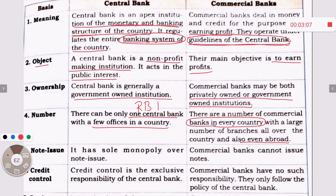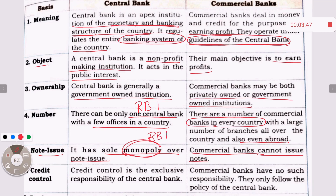The most important point is note issuing. The central bank has sole monopoly over note issue. Commercial banks cannot issue notes — that exclusive responsibility belongs only to the central bank, which is the RBI. Commercial banks have no such responsibility; they only follow the policy of the central bank.